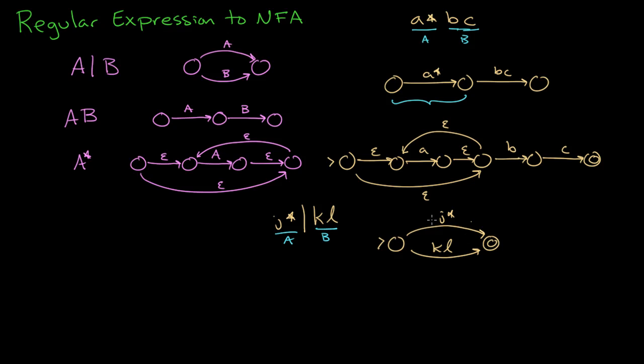So the J star needs to become four states. So I'll leave a little extra space for that. Here we go. So the first is epsilon. Then here's our J, then an epsilon. And the bottom one becomes KL.